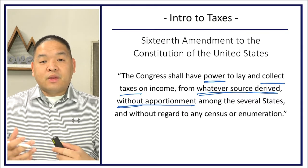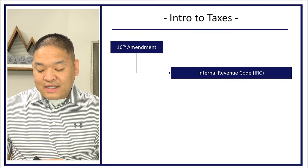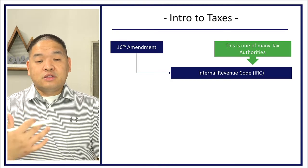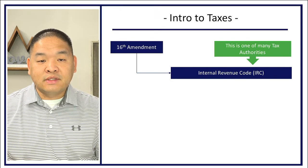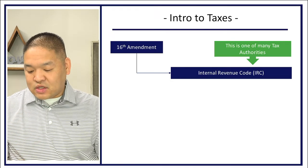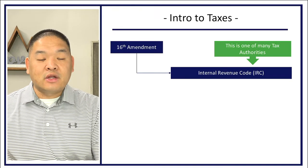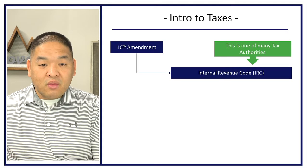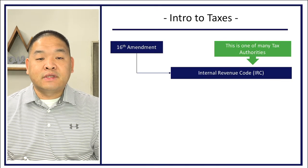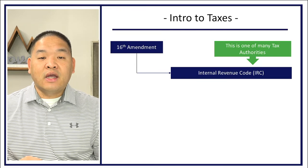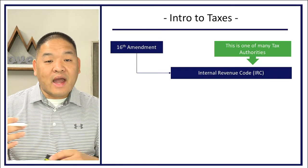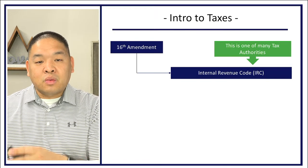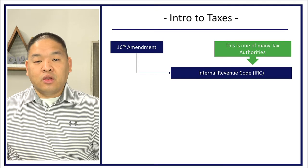Along with the 16th Amendment came something called the Internal Revenue Code. The Internal Revenue Code is basically the law that we must follow when it comes to income taxes. This is one of many tax authorities you'll hear about in this class, but specifically the big one is the Internal Revenue Code, or the IRC. If you're asked to check the Internal Revenue Code, the tax law, or the IRC, it's all meaning the same thing — it's the official rulebook when it comes to tax law.